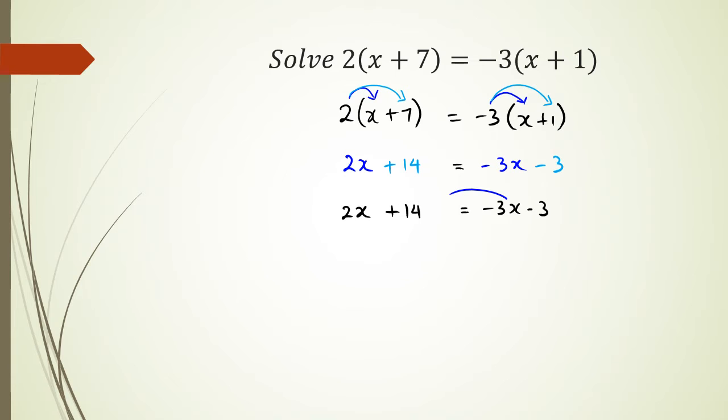So shifting negative 3x to the left hand side, I'm going to get 2x + 3x + 14 = -3. So what I have is 5x + 14 = -3 and then 5x is equal to negative 3 because positive 14 is being shifted to the side which will make it negative 14.